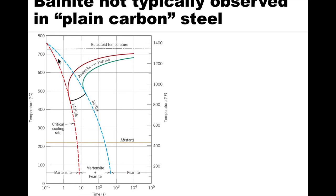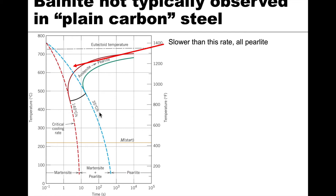Cooling slower than 35°C/s — below the blue curve — produces only pearlite, either coarse or fine depending on the relative rate. At an intermediate rate that crosses the pearlite start line but not the finish line, transformation is incomplete. The remaining austenite then cools down to the martensite region, forming martensite. Any cooling rate in this intermediate range produces a mixture of pearlite and martensite.